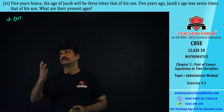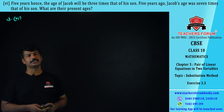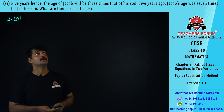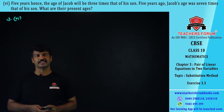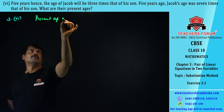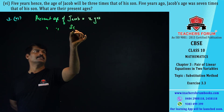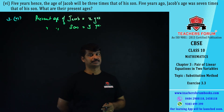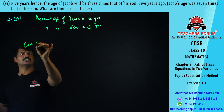Let us solve the sixth and final problem. It is given that after five years, Jacob's age will be three times that of his son, and five years ago Jacob's age was seven times that of his son. We need to find their present ages. Let Jacob's present age be x years and his son's present age be y years.